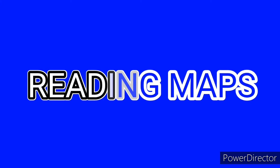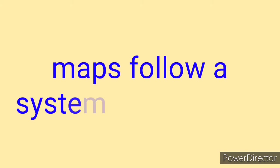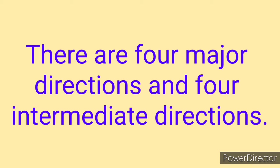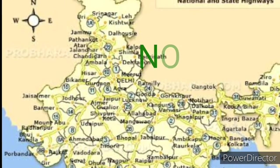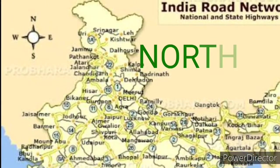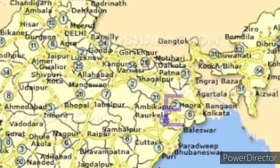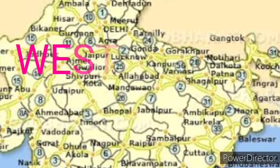Reading maps: maps follow a system of directions. There are four major directions and four intermediate directions. The top of the map is always North, marked by an arrow N. The bottom of the map is South, the right of the map is East, and the left of the map is West.